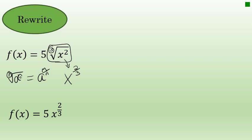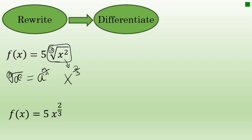Once the function is rewritten, you can move to step 2, which is to differentiate using the power rule. The power rule says that the derivative of any x to the n is equal to n times x to the power of n minus 1.